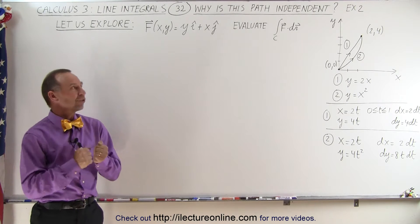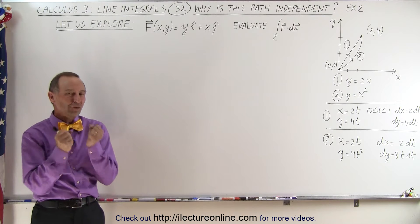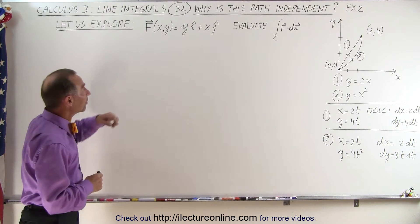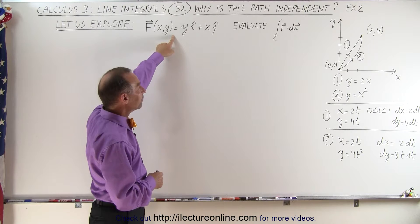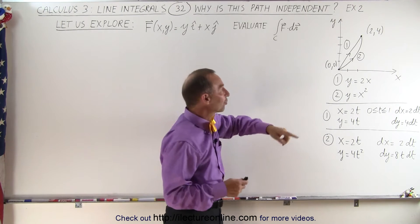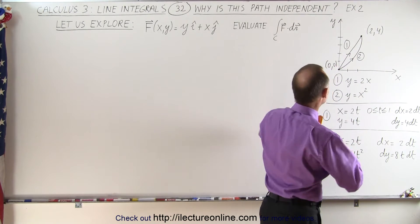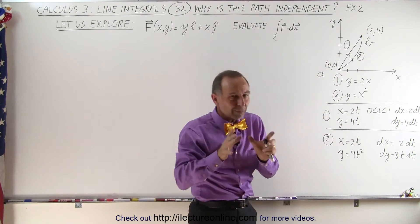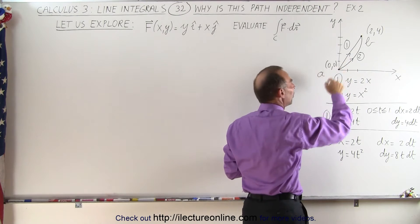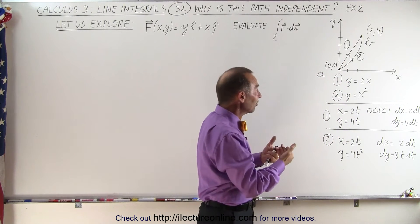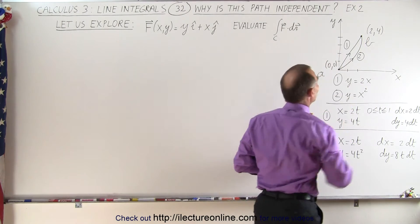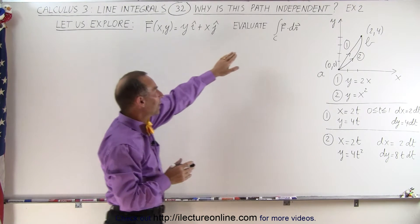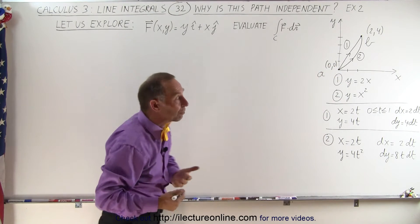Welcome to Y-Lecturn Line. To get a better understanding of what we mean by path independence, and to figure out what influences path dependence or path independence, we're going to take the same vector field for the function f and do the same evaluation, but now the path is going to be from (0,0) to (2,4). We're going to take two different paths from A to B to see if this is still path independent.